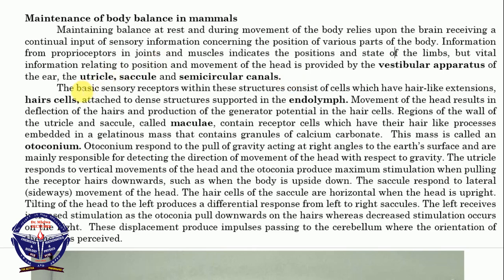Now the basic sensory receptor within this structure consists of cells which have hair-like extensions. The hair cells are attached to a dense structure supported in the endolymph. You must know each thing first. Within these structures, within the utricle together with the saccule, there are hair cells.